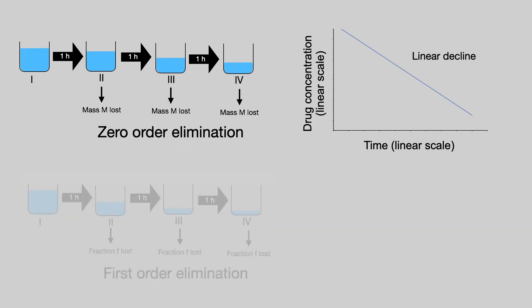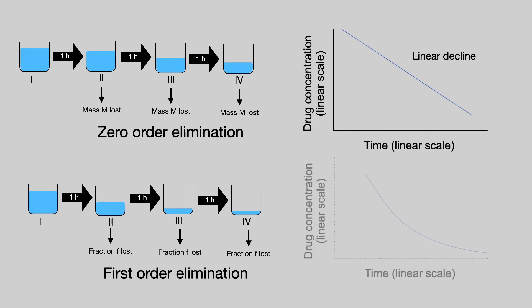Let's look at first order elimination. And again, we have our drug concentration versus time on a linear plot. But this time, instead of a straight line, we have a curve. And that's because first order elimination is exponential decline.